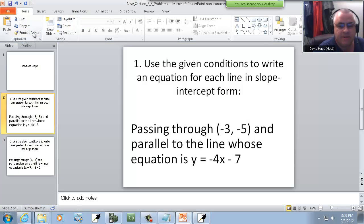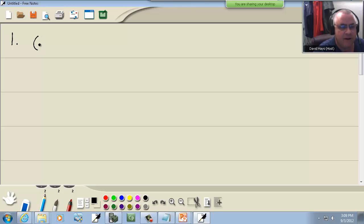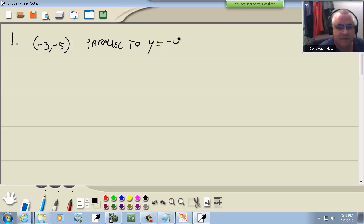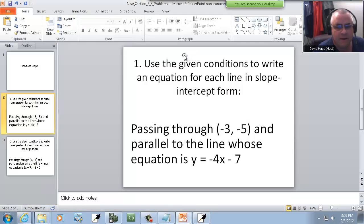It tells us it passes through the point and it's parallel to that line. The instructions say use the given conditions to write an equation for each line in slope-intercept form, passing through that point, parallel to that line.